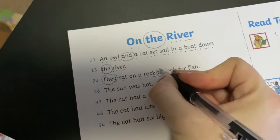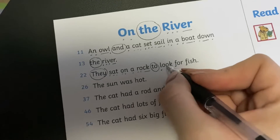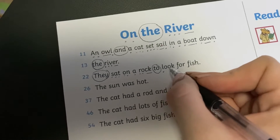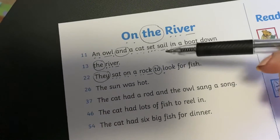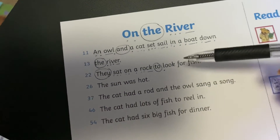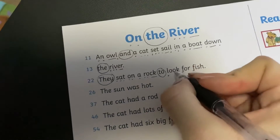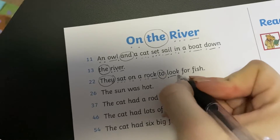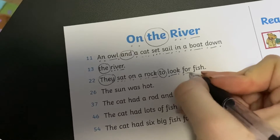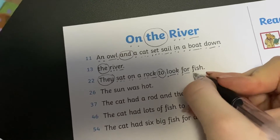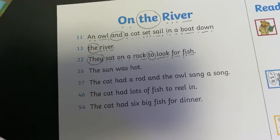Tricky word: 'to.' Let's have a look at this one — 'l.' What two different sounds can this make? Now this one — would I say 'they sat on a rock to look?' or 'they sat on a rock to look?' That's right, we've got l-u-k — 'look.' They sat on a rock to look. F-or — 'for' — f-i-sh — 'fish.' They sat on a rock to look for fish! Do you think owls and cats both like fish? I wonder.